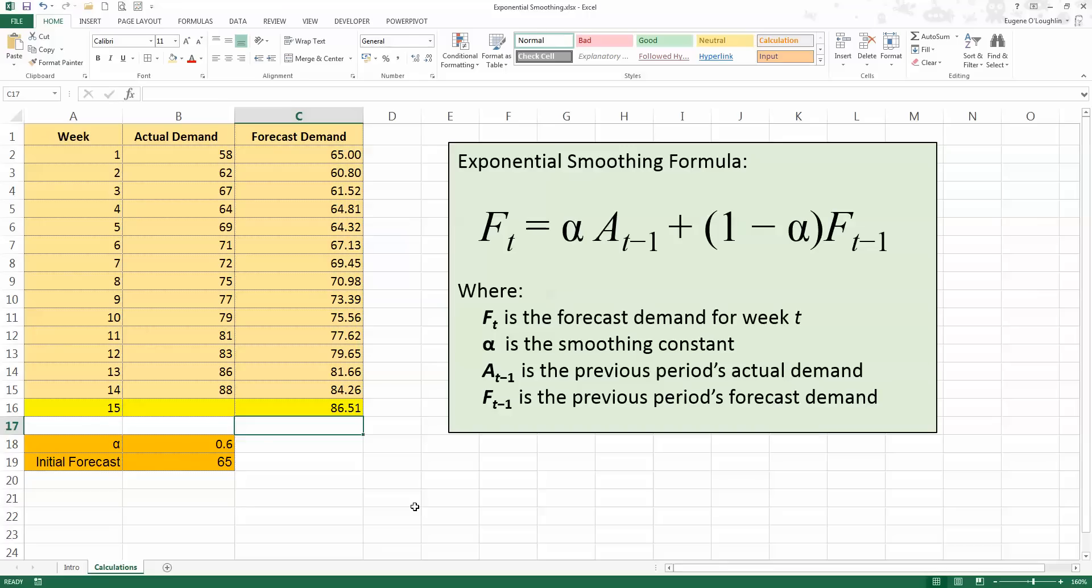So my overall exponential smoothing forecast for week 15, based on actual demand for weeks 1 to 14, and forecasted demand for weeks 1 to 14, is going to be 86.51 products. So in this way, I'm able to use exponential smoothing to make a forecast based on previous time series analysis data for actual demand and the forecasted demand. So that's how you forecast using exponential smoothing in Excel 2013. I hope you found this video useful. Thank you for your attention.